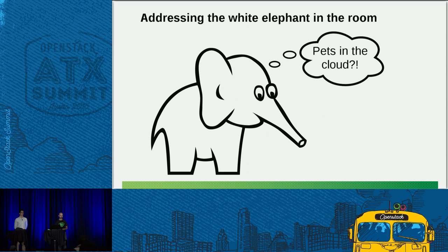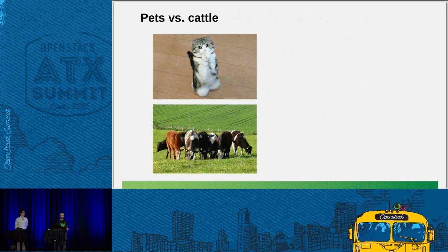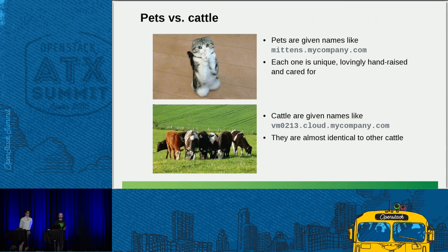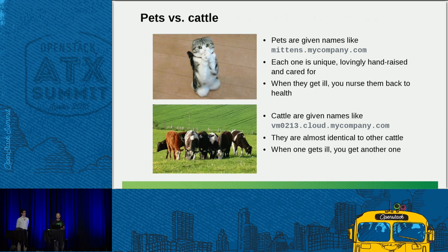The white elephant is whether you should run pets in the cloud or not. I'm assuming probably everyone here has heard of the pets versus cattle metaphor, but I'll run through it quickly just in case. This is a metaphor for virtual machines in your cloud. There are essentially two types: pets are typically given unique names whereas cattle aren't. This reflects that pets take a lot of work to create and look after, whereas cattle don't. Similarly, when something goes wrong with a pet you need to invest a lot of effort to fix it, whereas with cattle you just get another one.